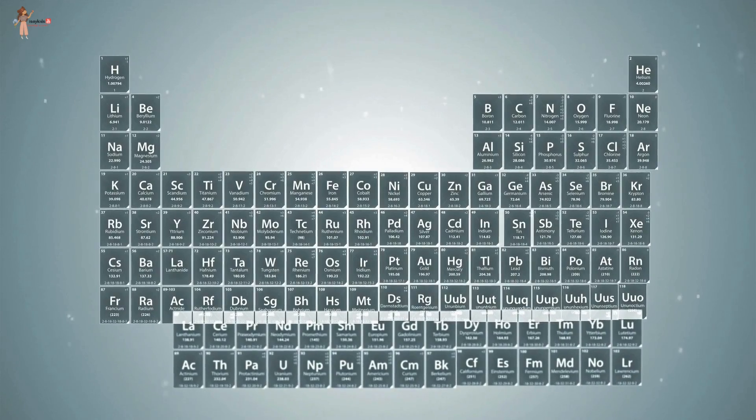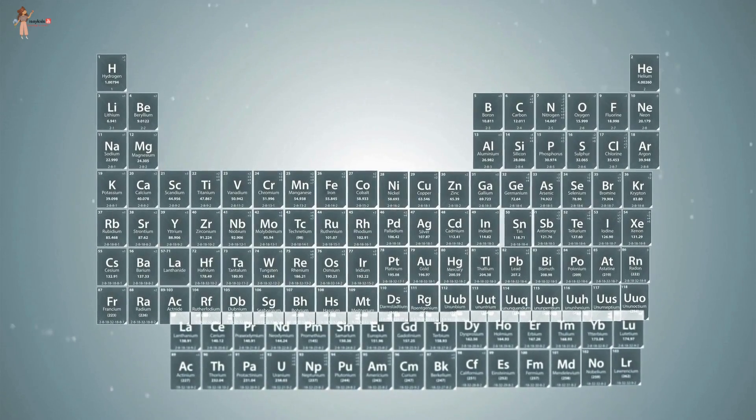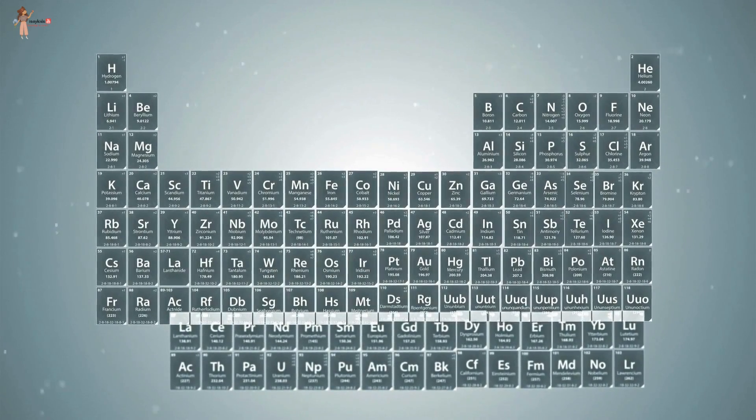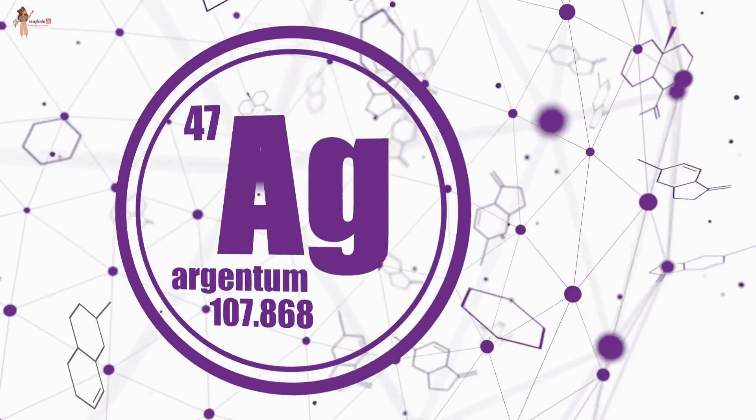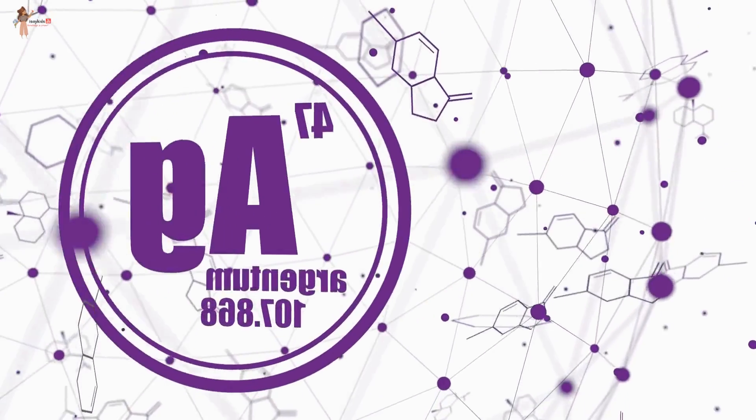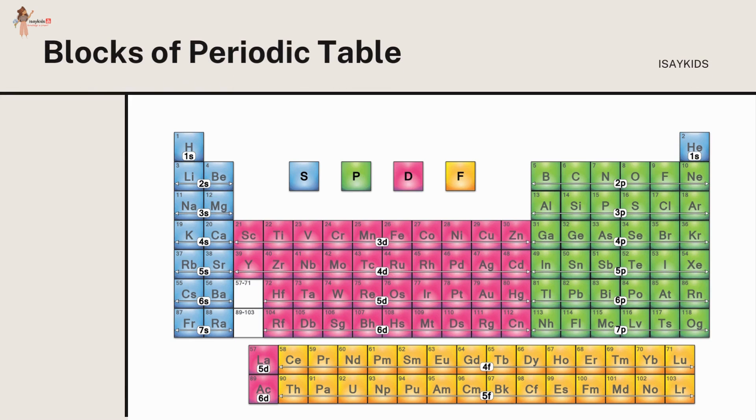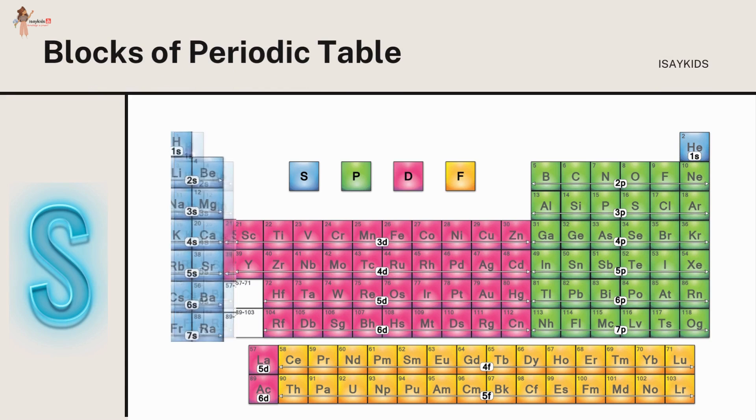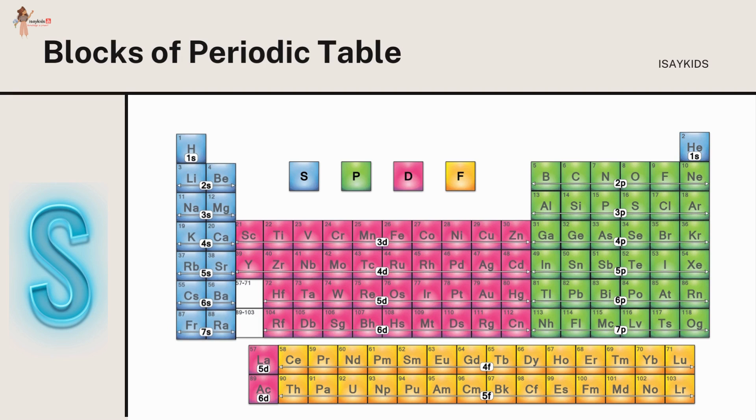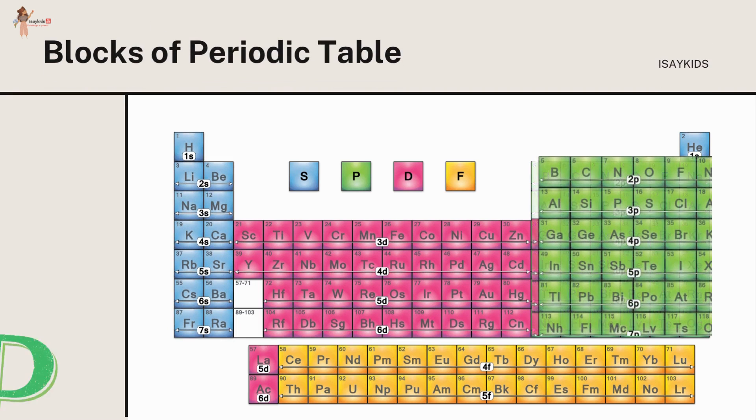But some symbols refer to older names of the elements. For example, the symbol for silver is Ag, which refers to its old name Argentum. The table is divided into four roughly rectangular areas called blocks: s-block, p-block, d-block, and f-block.